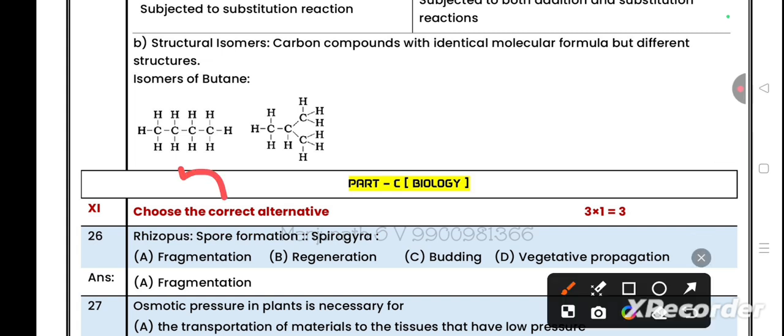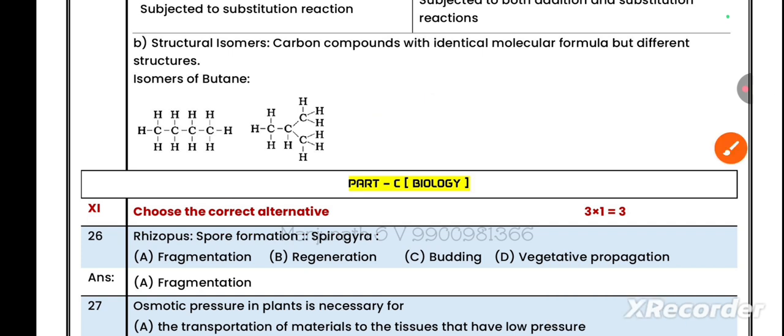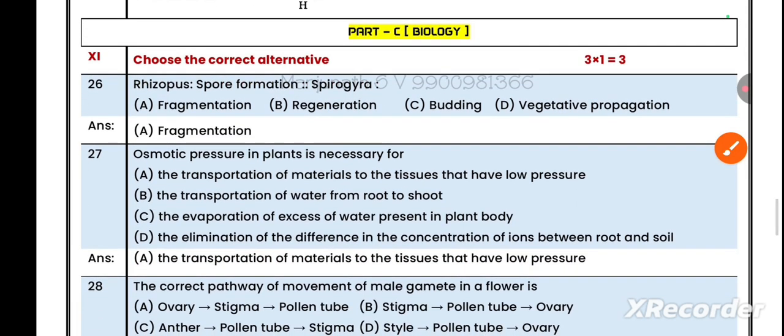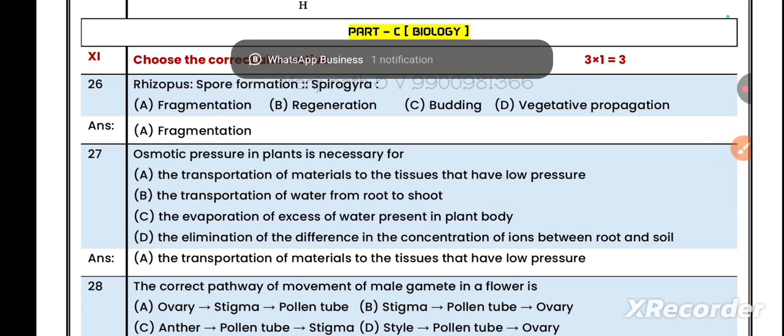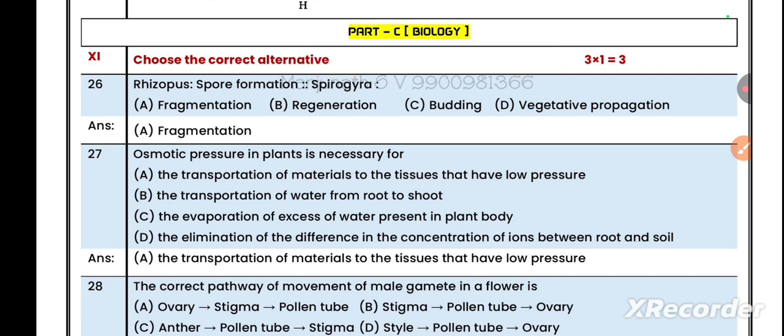Up to now we discussed 2024-25 model question paper science, question paper 3, that's the chemistry part. In the next clip we are going to discuss part C, that's the biology part. Within a short time I will upload this video. Hopefully these videos are helpful for your exam because these four model question papers and one preparatory question paper are enough for your study. You can score first class. Keep in mind and study well. Thank you so much.